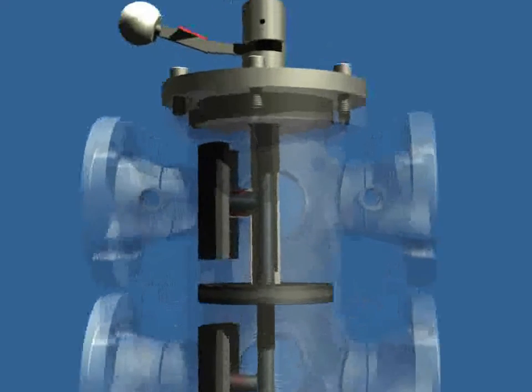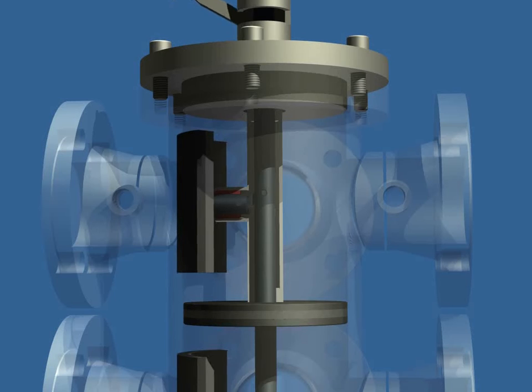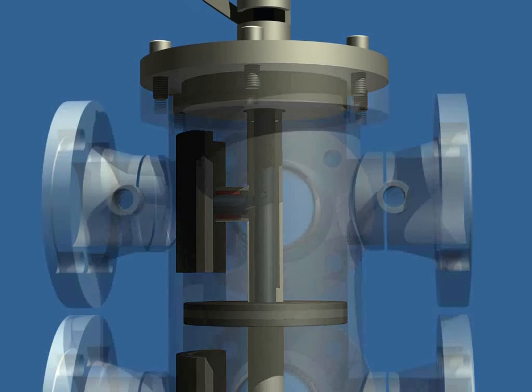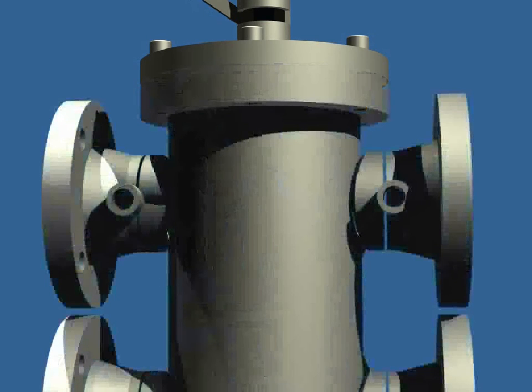To complete the changeover, hand tighten the t-bolt at the top of the valve. This sets the shoes in place. The operator can now service the vessel with no leakage from the HiCoA valve.